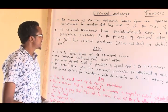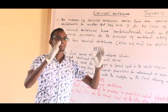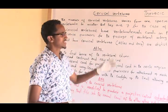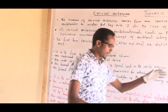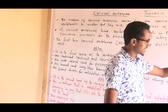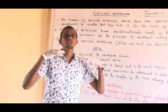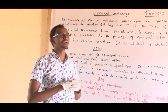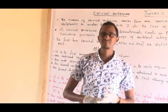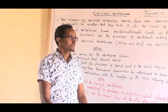We also discussed the vertebral column. We started with the general structure of the vertebral column, the different parts and their functions. The vertebral column may be classified into five types depending on position: cervical vertebrae, thoracic vertebrae, lumbar vertebrae, sacral and coccygeal vertebrae.